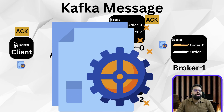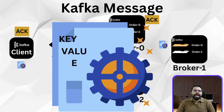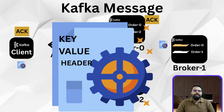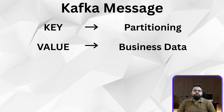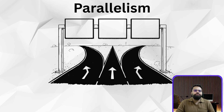Now let's break down a Kafka message. Each one includes a key, used to decide the partition; the value, which is the actual payload — maybe in JSON, protobuf, or plain text; and headers, which are optional metadata like version, correlation ID, or environment. Use keys for routing, values for business logic, and headers for observability and tracing.